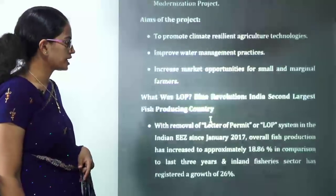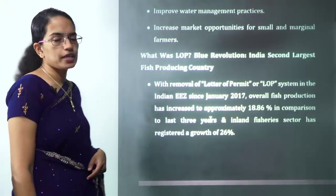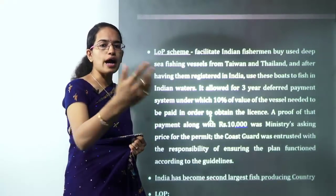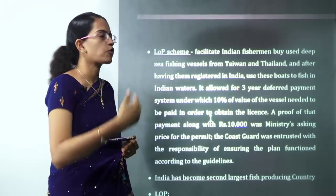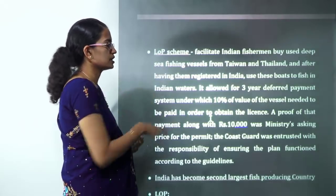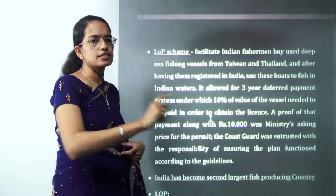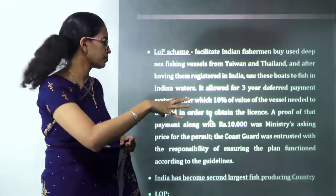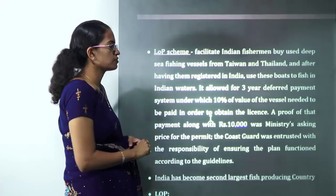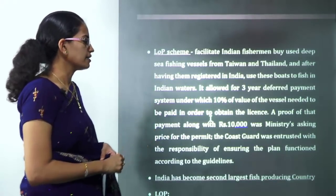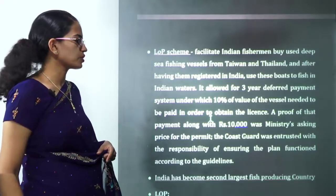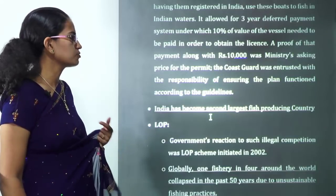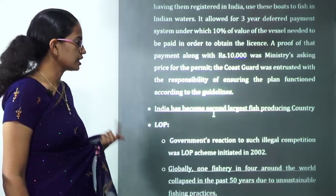The Letter of Permit (LOP) is very important. Indian fishermen are now allowed to buy used vessels from Taiwan and Thailand and get them registered in India for boating purposes. They are allowed a three-year deferred payment at 10% of the vessel's value and must provide proof of payment of Rs. 10,000 to the ministry.